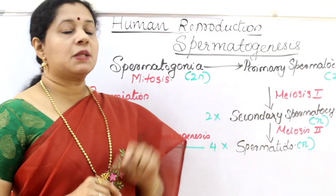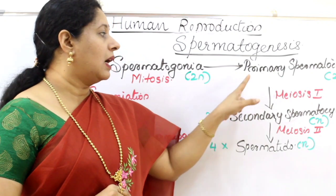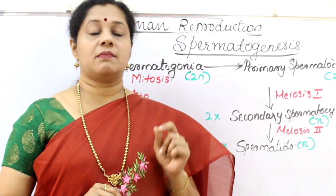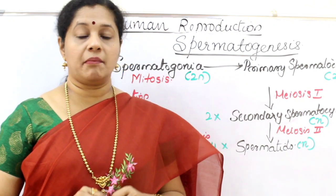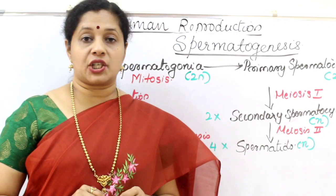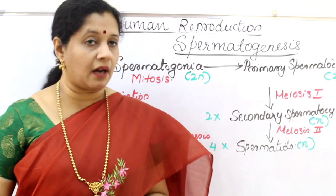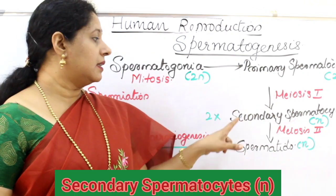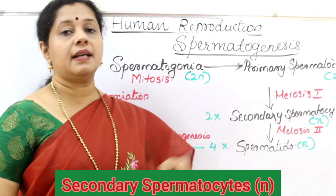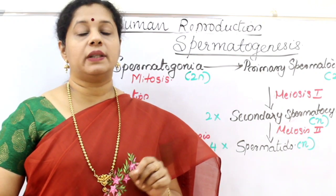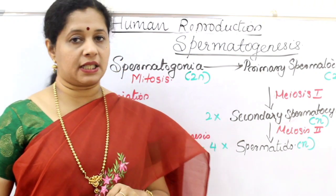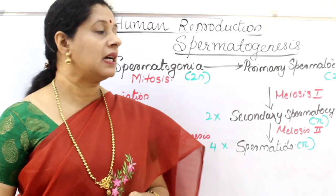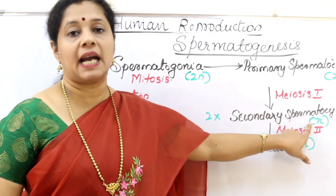The primary spermatocyte will now undergo first meiosis. Meiosis has got two stages: meiosis 1 and meiosis 2. It is a reduction division where the chromosome number becomes half. After meiosis 1, the cells formed are called secondary spermatocytes. Two secondary spermatocytes will be produced, and by this time the ploidy will become haploid.